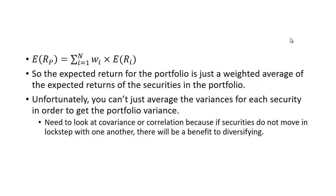One security may go up and the other may go down. If they happen to move in opposite directions all the time — that is, they are perfectly negatively correlated — you could take two risky securities, combine them, and actually have a portfolio that has no risk. So what you need to look at is the covariance or the correlation between pairs of securities.